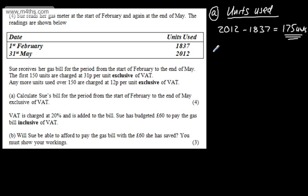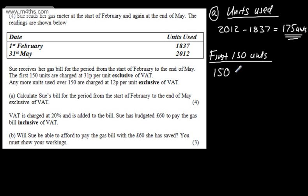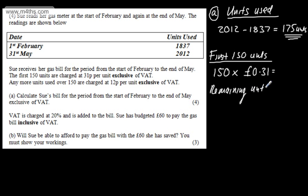Now I'm going to look at the first 150 units. We could use pence or pounds — it's entirely up to you, but just appreciate your answer will need to be in pounds. So we have 150 multiplied by £0.31. For the remaining units, we can see that we have 25 units left over.